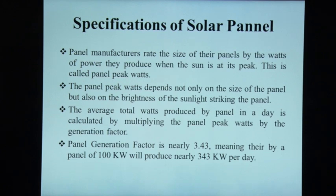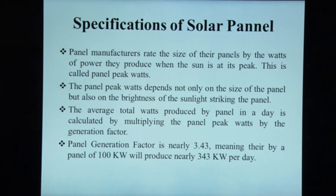Panel manufacturers rate their panels by the watts of power they produce when the sun is at its peak — called panel peak watts. Peak watts depends not only on panel size but also on the brightness of sunlight striking the panel. The average total watts produced by a panel in a day is calculated by multiplying panel peak watts by the generation factor, which is approximately 3.43. This means a 100-watt panel will produce nearly 343 watt-hours per day.